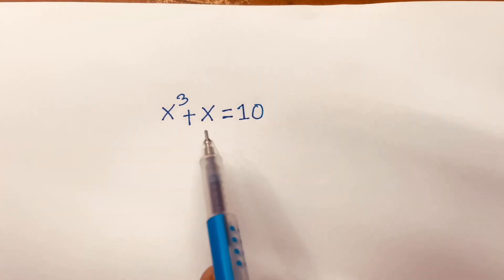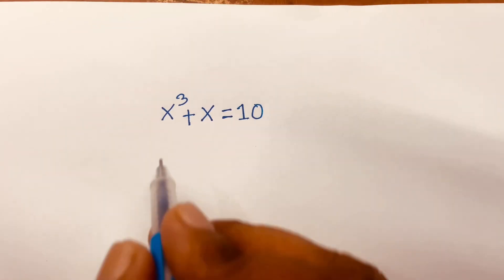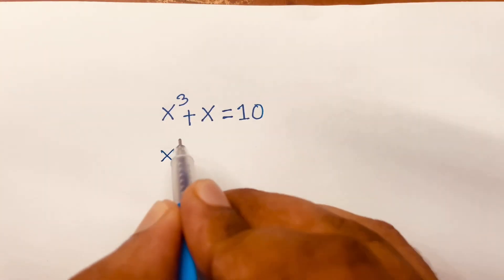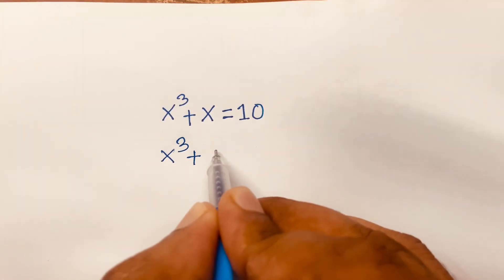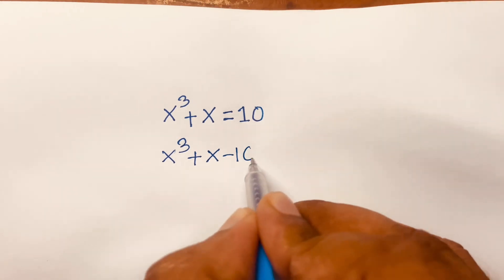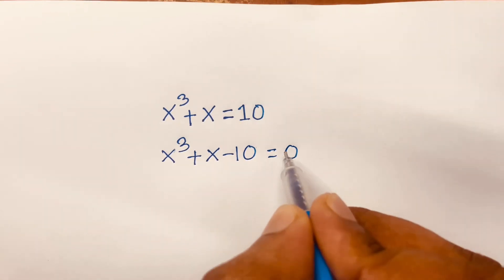How to solve x to the power 3 plus x is equal to 10. This equation becomes x to the power 3 plus x minus 10 is equal to 0.